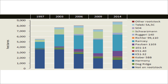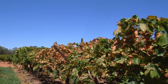Currently, in the Murray Valley Table Grape Region, the most commonly used rootstocks are Ramsey, Schwartzman and 1103 Paulsen, accounting for approximately 65% of all plantings in the region. Other minor rootstocks include 5C Teleki, 140 Ruggeri, Dog Ridge and 5BB Kober.